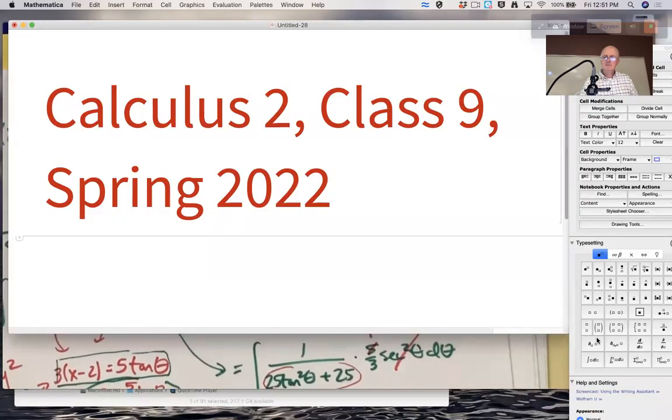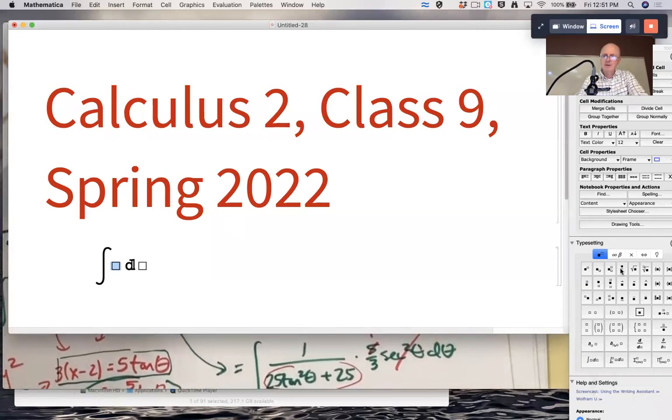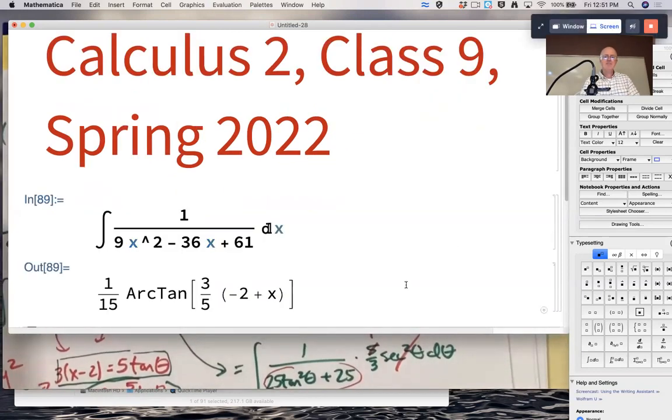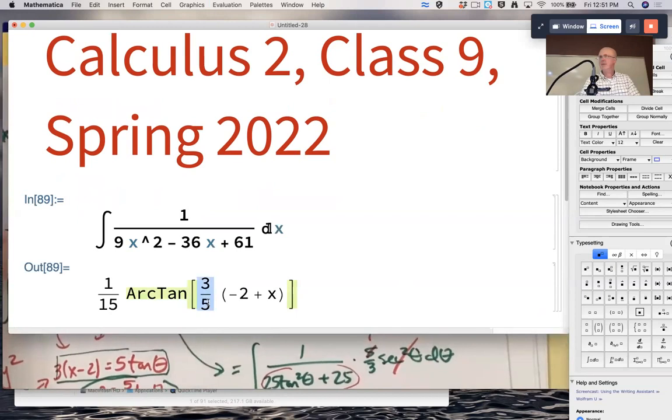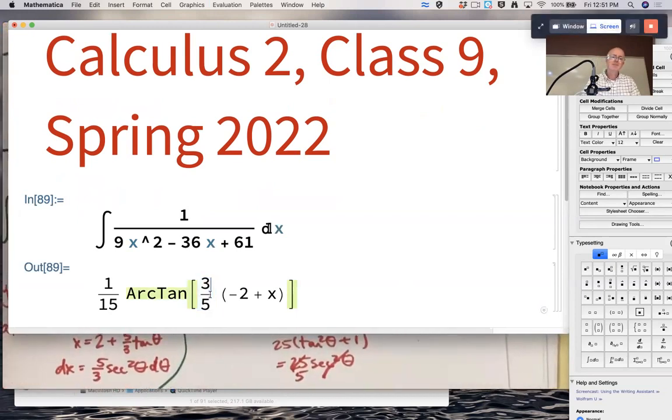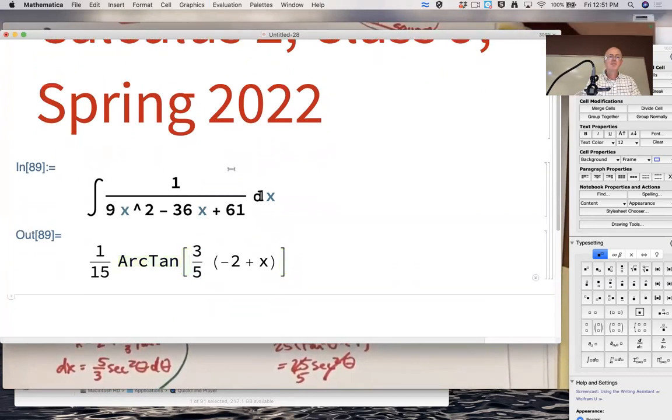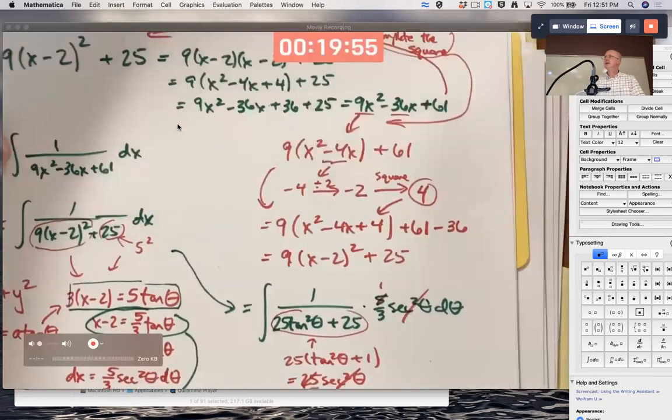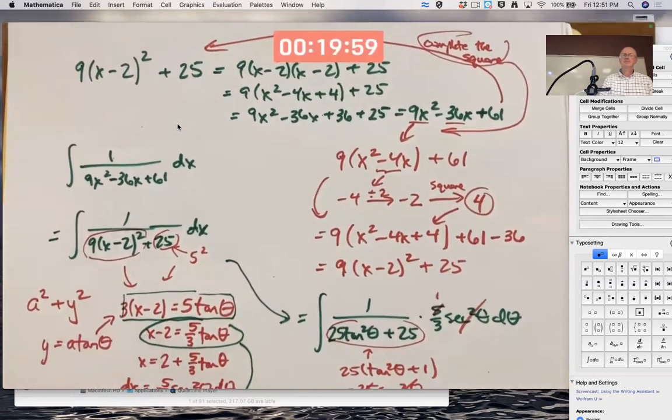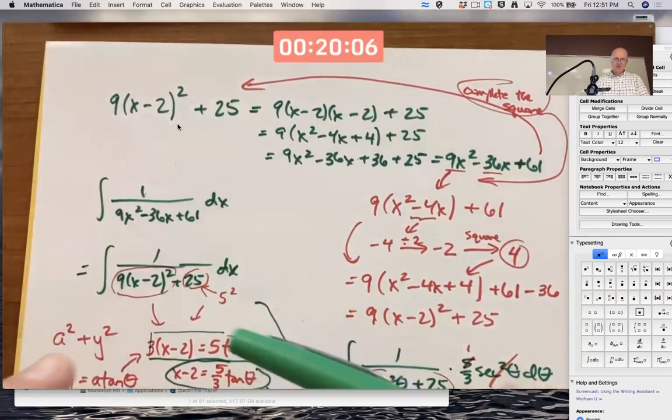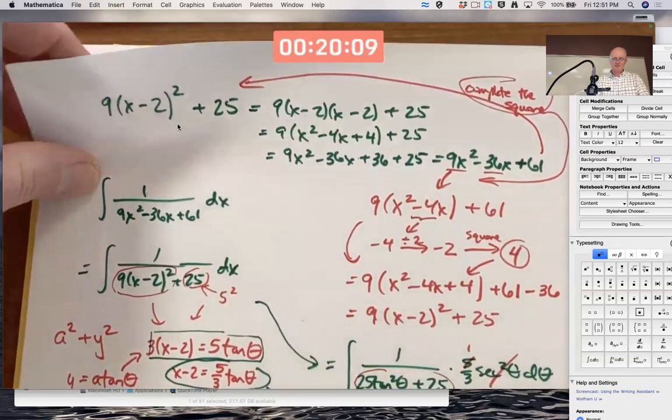Mathematica does confirm this answer as being correct. Let's type it in there as the original integral: 1 over (9x² - 36x + 61). That is the same. Mathematica doesn't bother multiplying the 3 through the parentheses. And again, you don't forget the plus C. So complete the square when you can't factor the bottom. And then either do an ordinary substitution or a trig substitution.